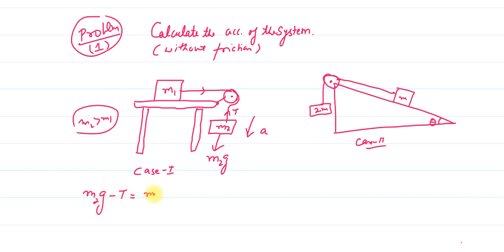Net force equals mass times acceleration. For the first mass m1, it will only have tension, so T equals m1a. Then we have m2g minus T equals m2a. The tension comes from m1a.